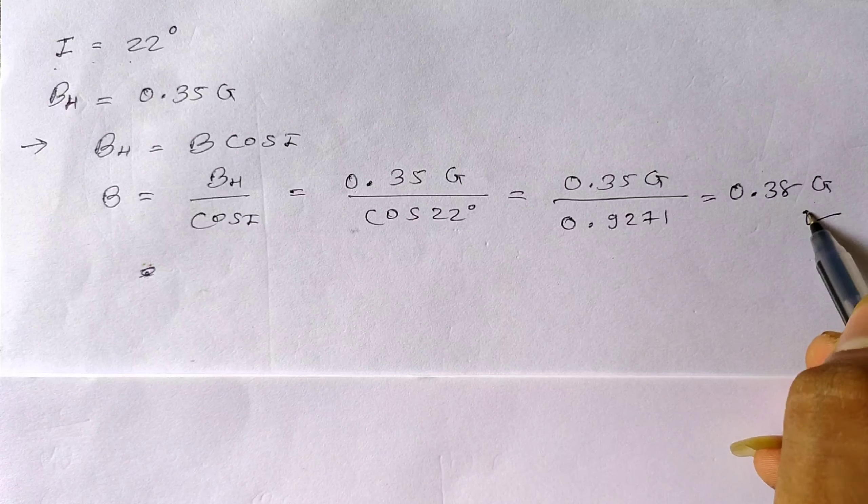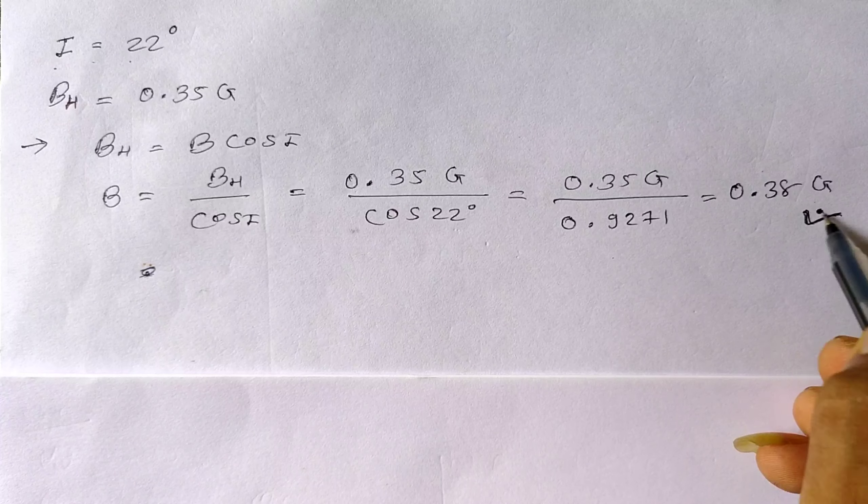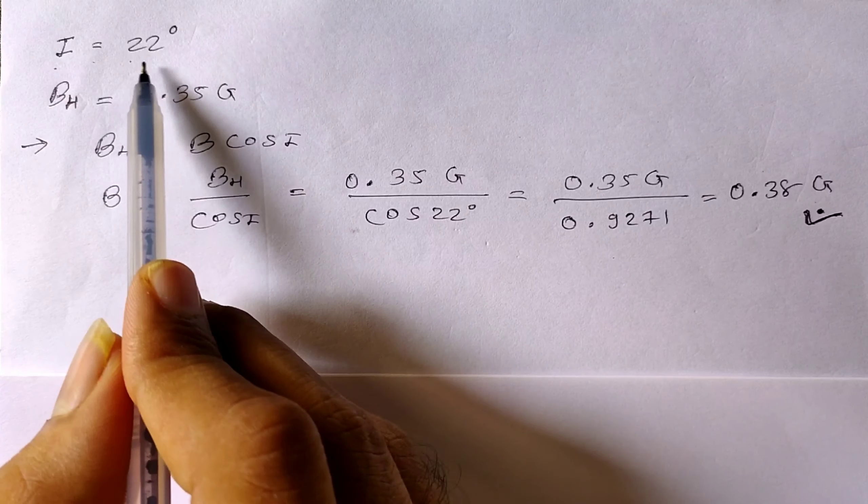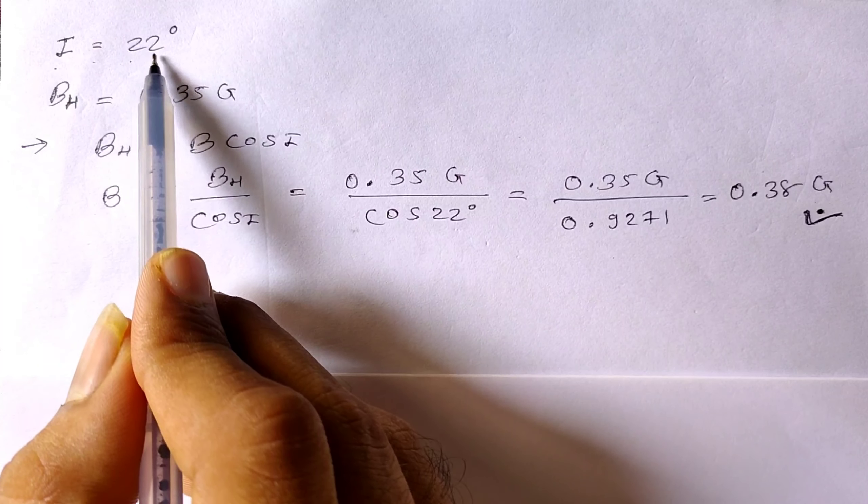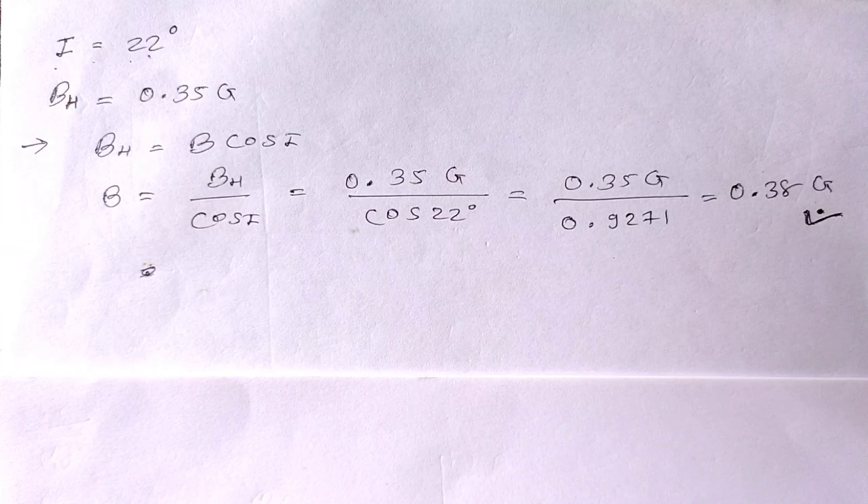So it is the magnitude of magnetic field of Earth where it makes an angle, or you can say where the magnetic needle makes an angle 22 degrees with the horizontal.